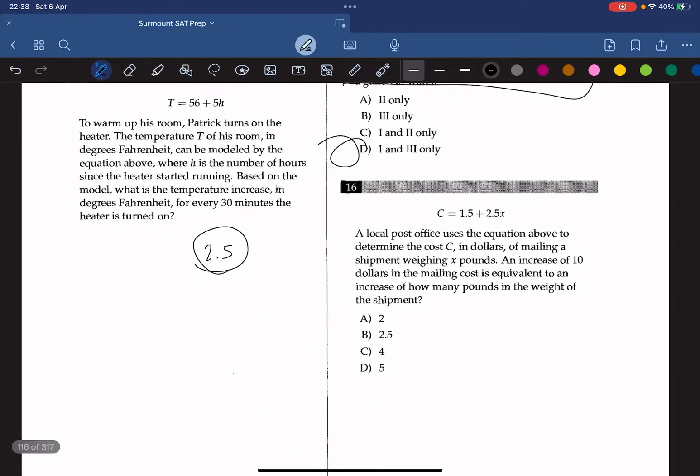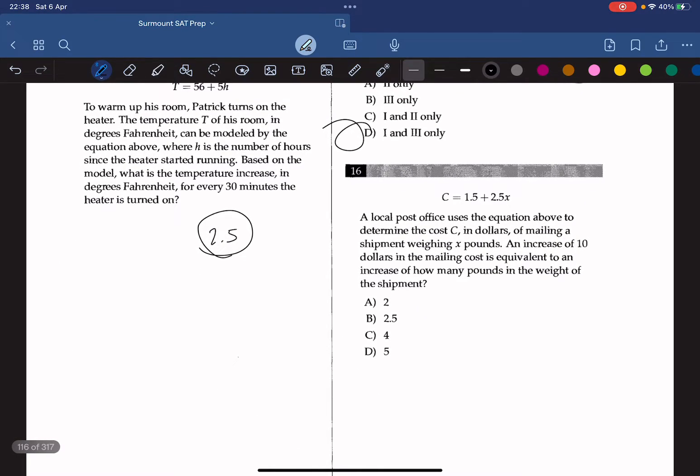Moving on to the last question. A local post office uses the equation above to determine the cost c in dollars of mailing a shipment weighing x pounds. An increase of $10 in the mailing cost is equivalent to an increase of how many pounds in the weight of the shipment? The question is asking for the change in x per change in y. So that is the reverse of this slope. So what we can do here is to rearrange the equation like we've been doing before in terms of c to get x.